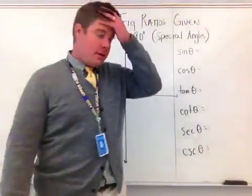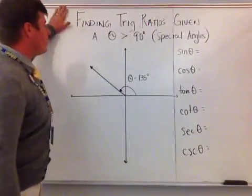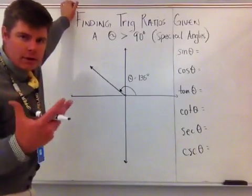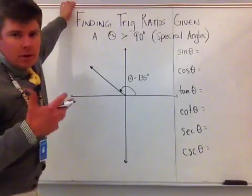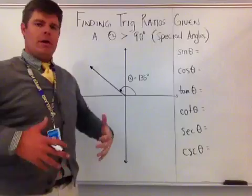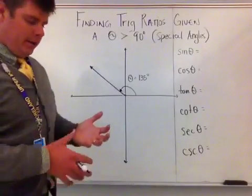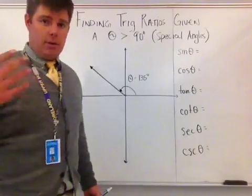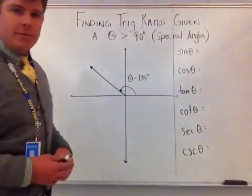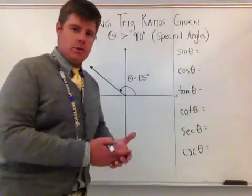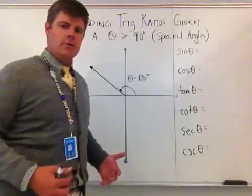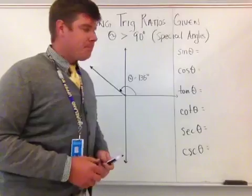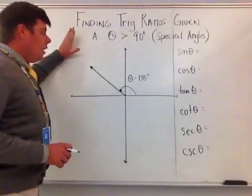Let's talk about finding trig ratios given a theta that's greater than 90 degrees. We're going to be talking about special angles. If you want to talk about non-special angles like 15 or 20 degrees, this isn't the video to watch — I'll make another one. For now, it's about becoming associated with reference angles and how we apply them to find trigonometric ratios.